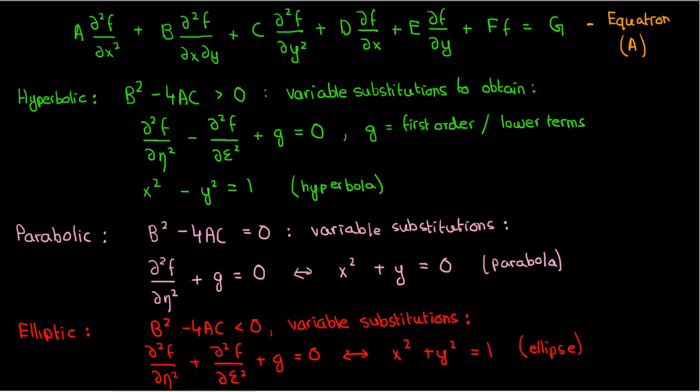Note that if the coefficients A to G in equation A up here are constants, then the resulting PDE is either hyperbolic, elliptic, or parabolic. However, if the coefficients are variable, then it's possible for the PDE to be hyperbolic in some regions and elliptic or parabolic in other regions.